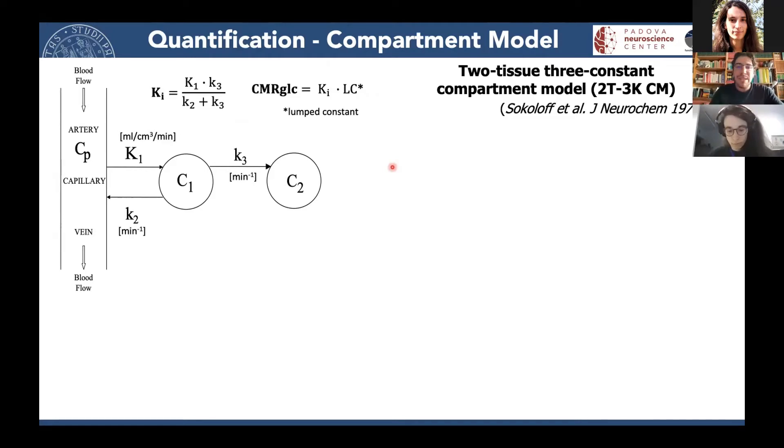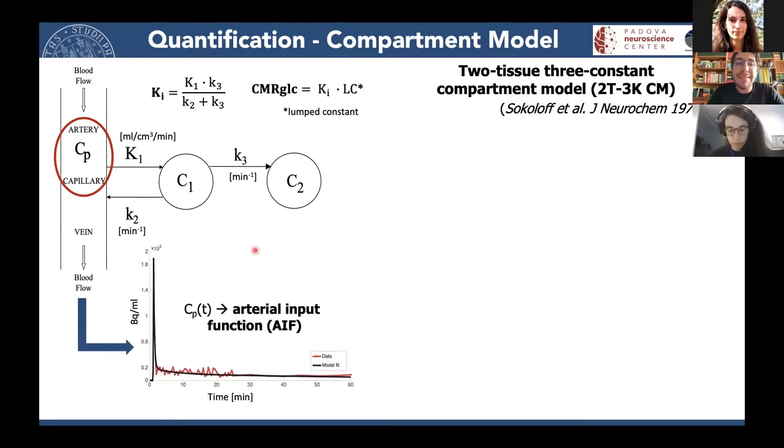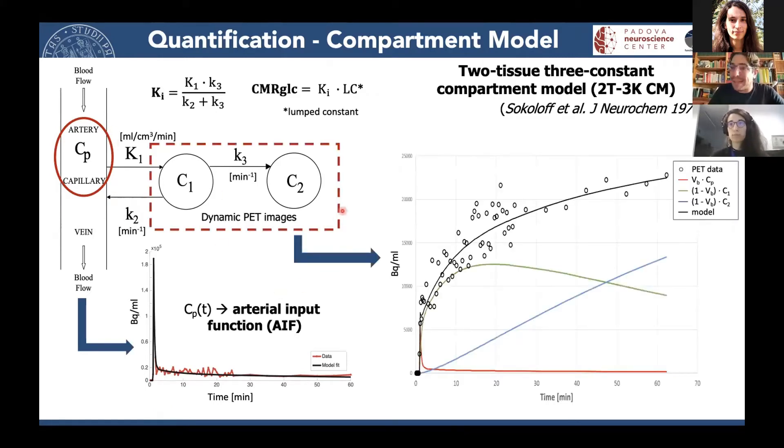We need two things. Actually, we need the arterial input function, that is just the concentration of FDG, the amount of FDG available in the arterial blood for exchanges with the brain tissue. And then we need the dynamic PET images.